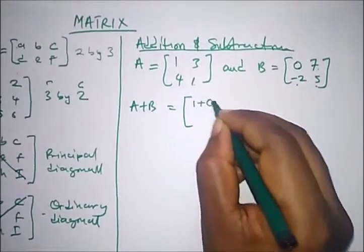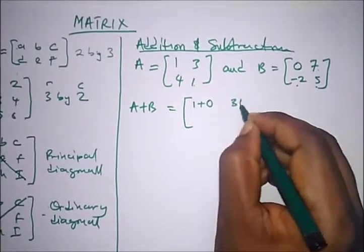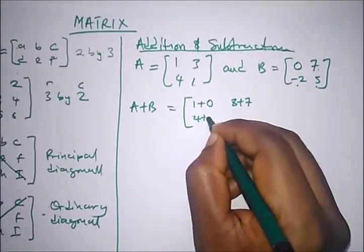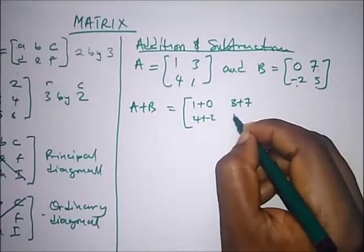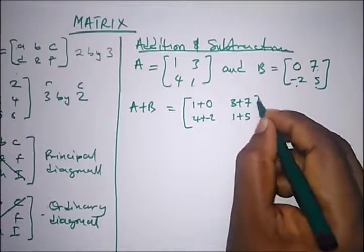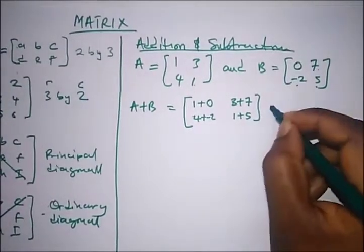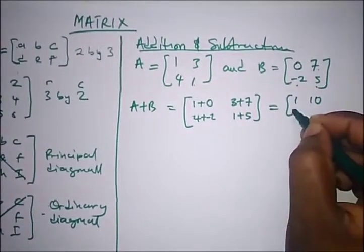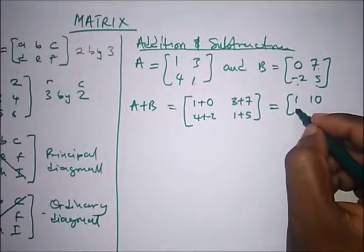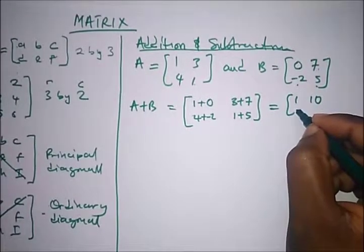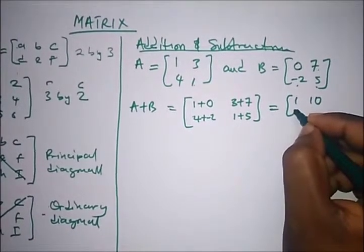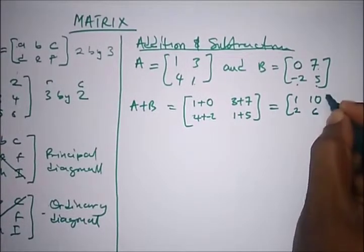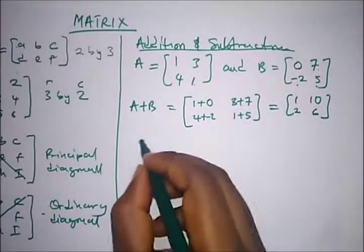So A plus B gives us: 1+0, 3+7, 4+(−2), and 1+5. That gives us the matrix [1 10 / 2 6].